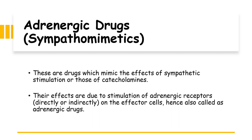When we say adrenergic receptors, we have to review the different types and their functions to understand the effects of the sympathomimetic drugs. For the adrenergic receptors, we have alpha-1 and alpha-2. For the beta receptors, we have beta-1 and beta-2.